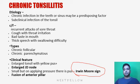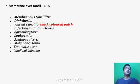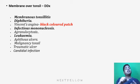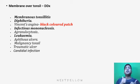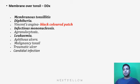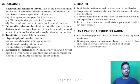Differential diagnosis of membrane over the tonsil includes: membranous tonsillitis; diphtheria, presenting with a dirty white membrane — rubbing causes bleeding; candidiasis, where the whitish layer separates without bleeding; Vincent's angina with a black-colored patch; and other conditions like infectious mononucleosis, agranulocytosis, leukemia, aphthous ulcers, and malignancy of the tonsils.